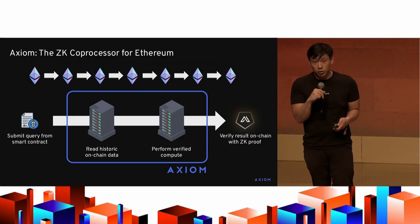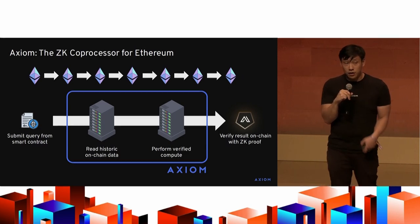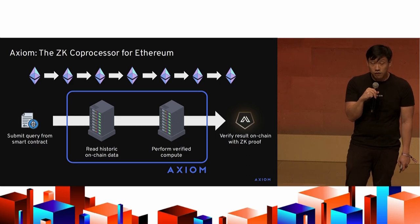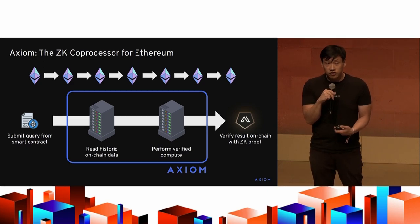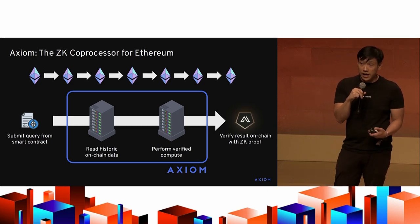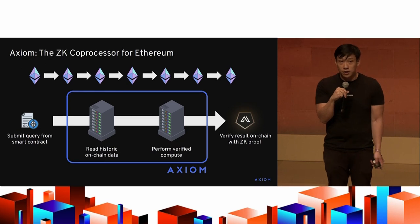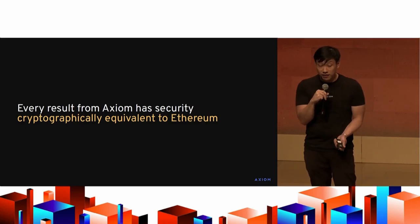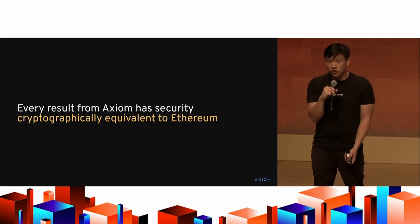What we've packaged that into is something we're calling a ZK coprocessor for Ethereum. Smart contracts can query Axiom on-chain to do a combination of historic data reads and verified compute over that data. We generate results off-chain and provide a zero-knowledge proof that everything we computed was valid. Once we verify that proof on-chain, you can use the result in your smart contract however you like — with security that's cryptographically equivalent to accessing data on-chain in Ethereum itself.